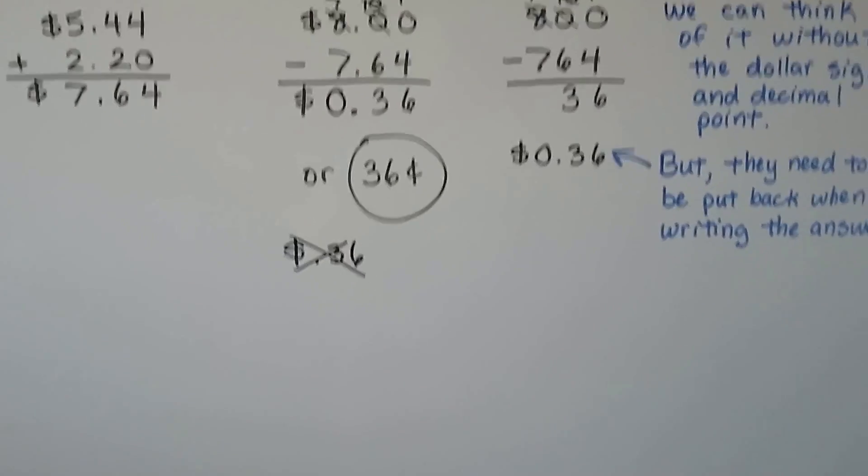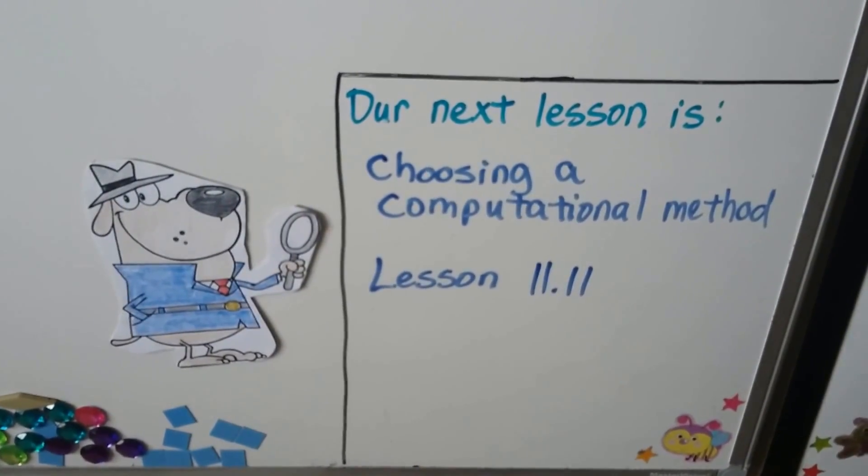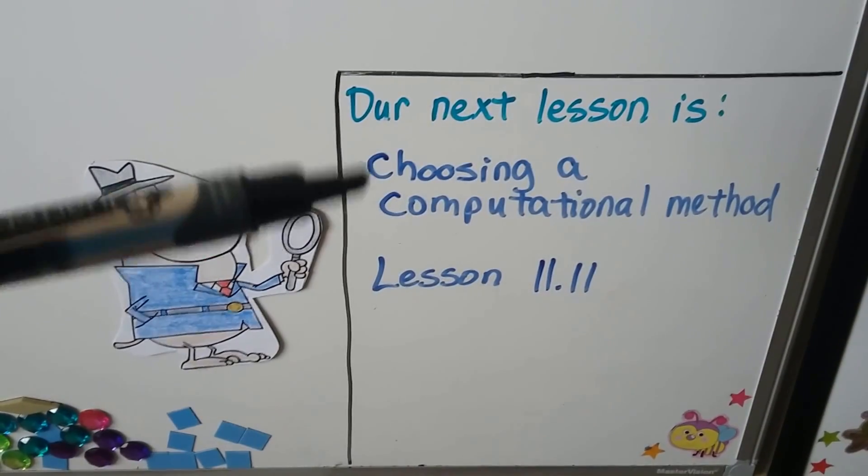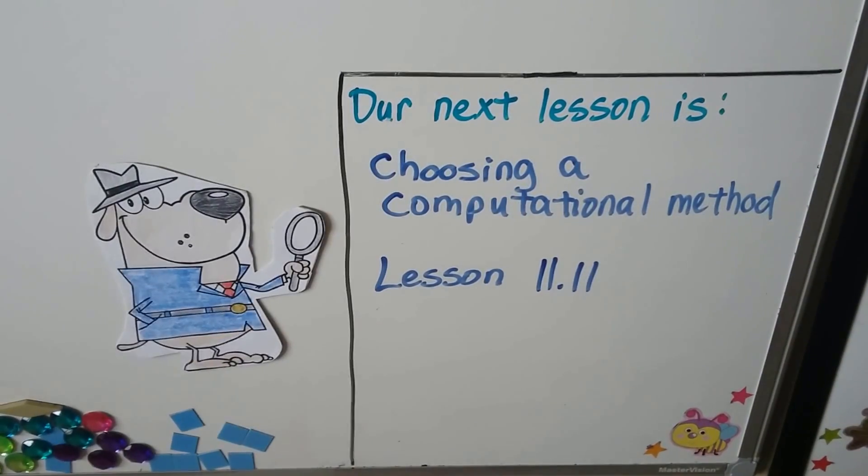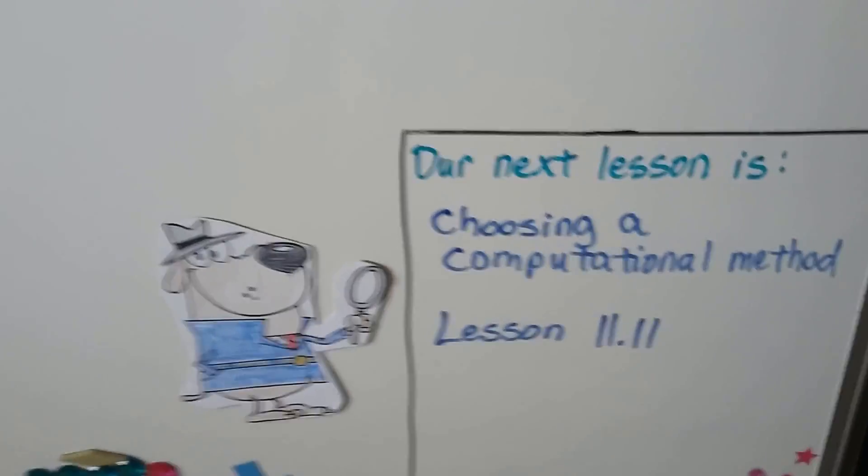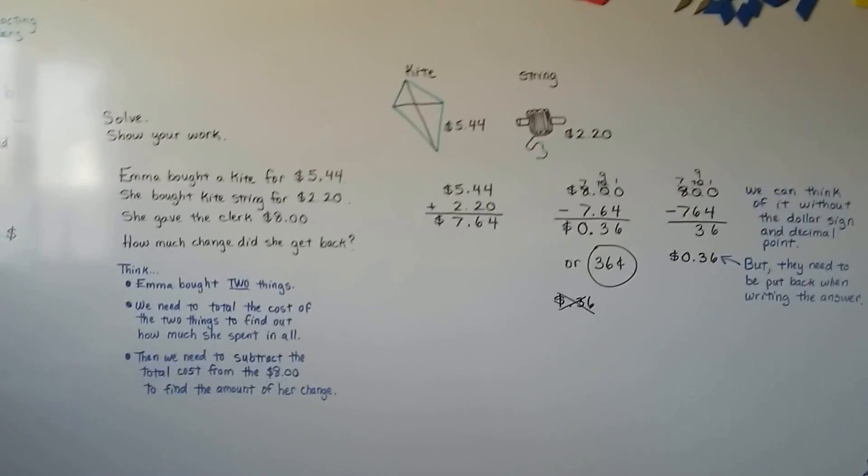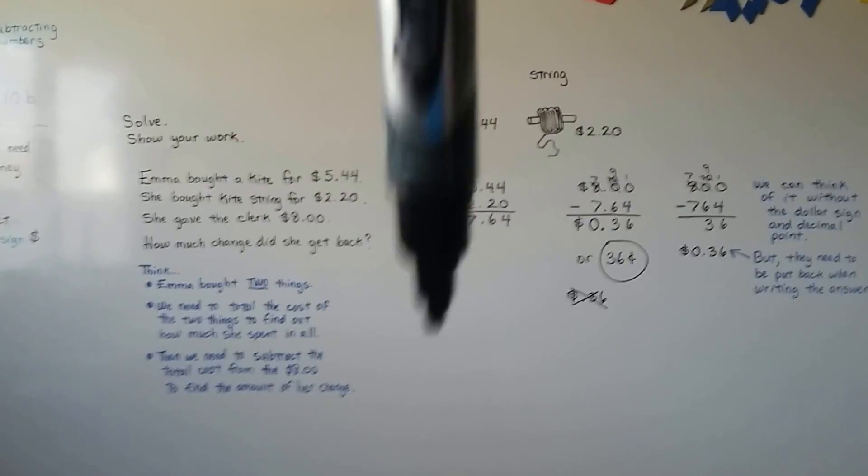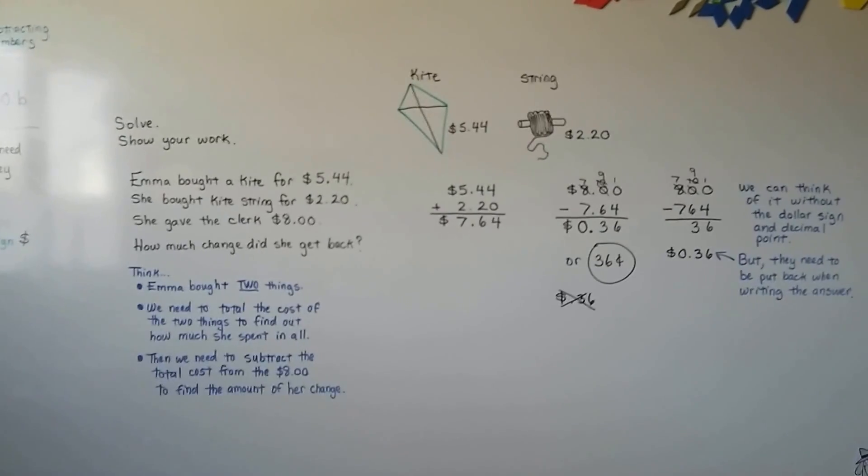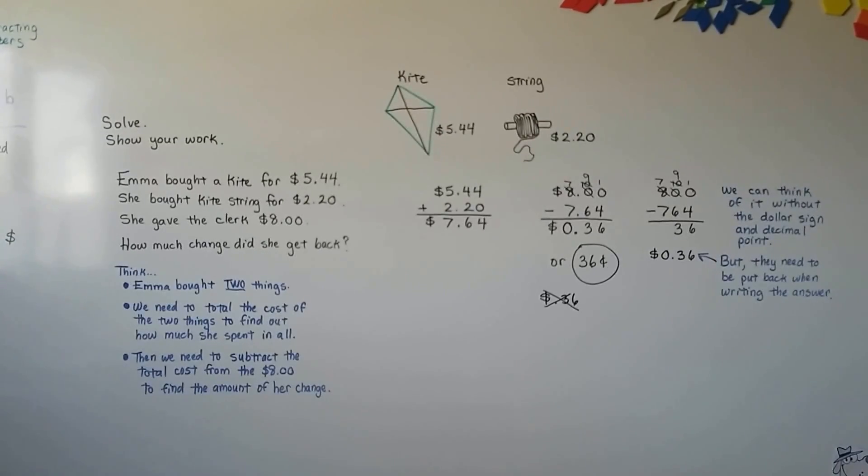Okay? So, our next lesson is choosing a computational method. That's lesson 11.11. I hope you're having a great day. And remember to keep your decimal points all nice and neat going straight up and down. And remember to put your dollar signs. Okay? I'll see you next time. Bye!